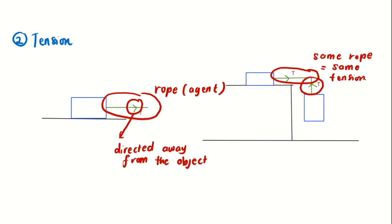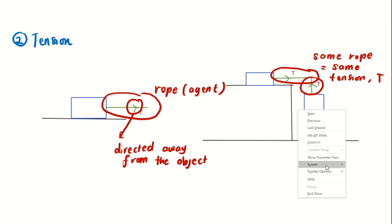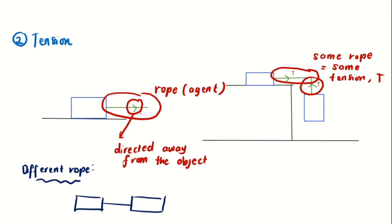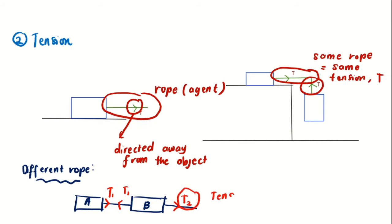If we have two different ropes or wires connecting two objects, each rope will have a different tension value. In this case, we label them T1 for one rope and T2 for the other rope, since they are different agents producing different tension forces.